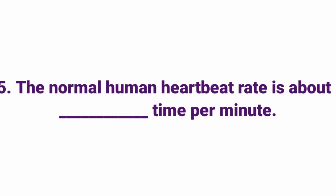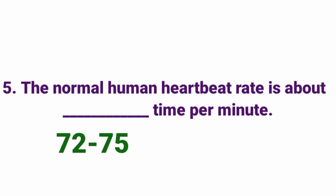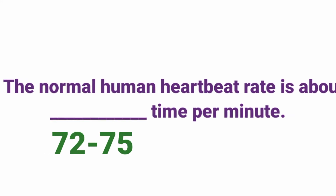The normal human heartbeat rate is about ___ times per minute. Answer: 72 to 75 times per minute.